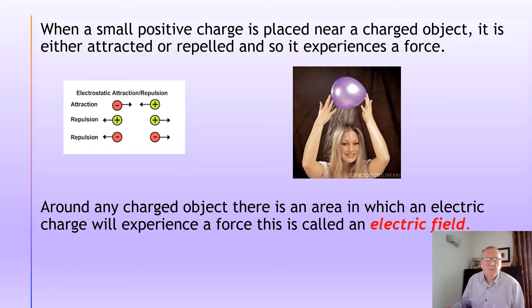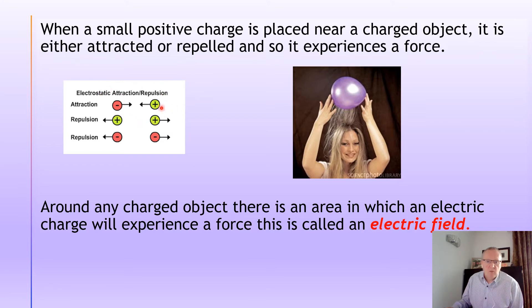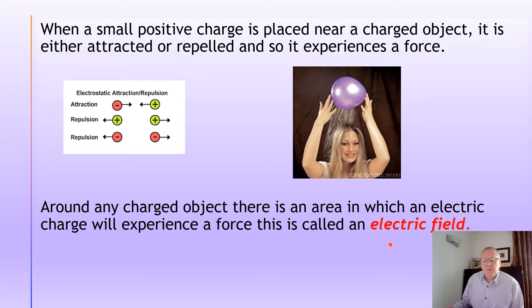In first and second year science you did a whole topic on electricity and static electricity, which involved looking at the different types of charge. For example, when a small positive charge is placed near another charged object it's going to either be attracted or repelled — that's called electrostatic repulsion. So if you have a positive and a negative charge they will attract each other, opposites attract. If the two charges are the same then they will repel each other — that's a force acting on the charges. Think of a charged balloon making hair stand up because there's a force — the charged balloon attracts the hair.